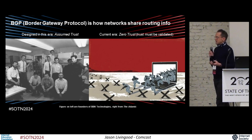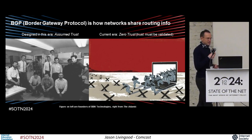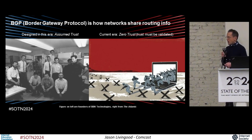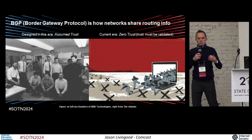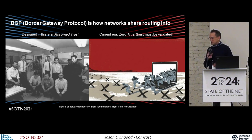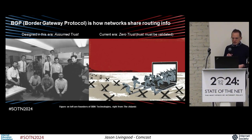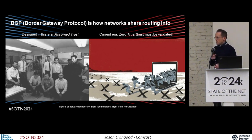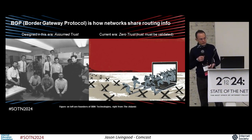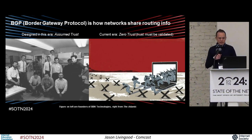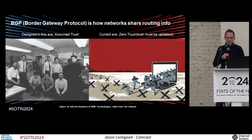But that protocol was designed in a very different era — the era where everybody knew each other. They were all academics, a small number of generally academic and nonprofit networks. You couldn't imagine that somebody would launch a spam or network attack because that was somebody you worked with and knew at UCLA or University of Pittsburgh. So that was an era of assumed trust. The era that we're in now is the era of zero trust, where you don't know who someone is when they connect to the network, you don't know if traffic is valid. That's really difficult when the core protocol that announces where all network resources are was designed in an era we are long past.